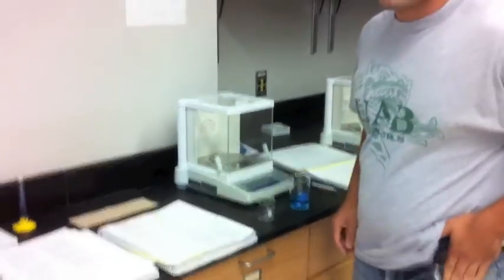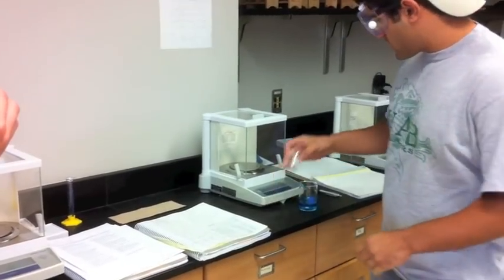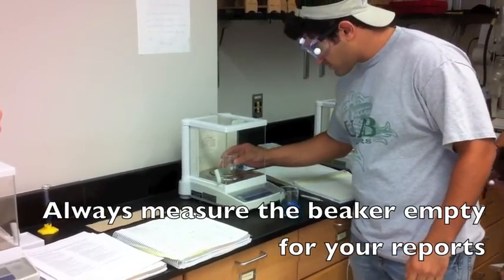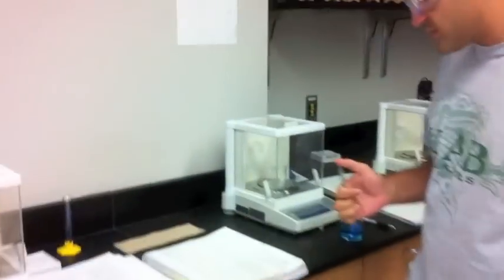Now to start we're going to tare it. Now I'm going to measure the beaker by 50 milliliters. You get about 30.37.